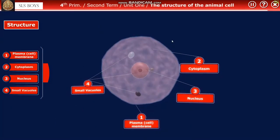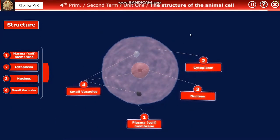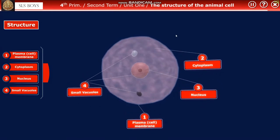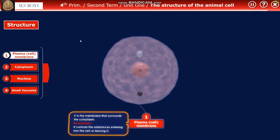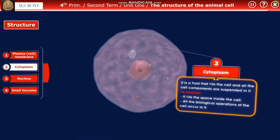Now let's look at the animal cell. As you can see, it looks like a sphere and has no cell wall. The first part is the plasma membrane, which surrounds the cytoplasm and controls substances entering or leaving the cell. Next is the cytoplasm, a fluid that fills the cell with all components suspended in it.